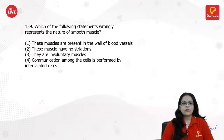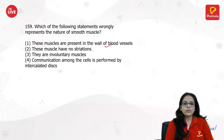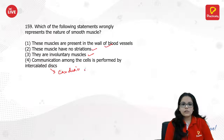Which statements represent smooth muscles? These muscles are present at the wall of blood vessels. They have no striations because they are smooth, and they are involuntary. Communication among smooth muscle cells is not performed by intercalated discs — that is a feature of cardiac muscles, so that statement is wrong.